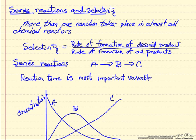Here I want to discuss series reactions in chemical reactors and how we would maximize selectivity. We have more than one reaction taking place in almost all chemical reactors, and so often more important than rate would be selectivity. A common way of defining selectivity is the rate of formation of a desired product over the rate of formation of all the products.